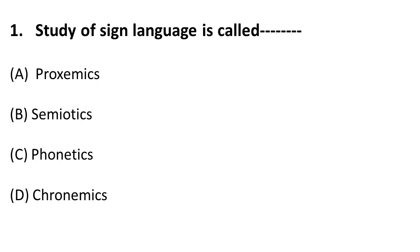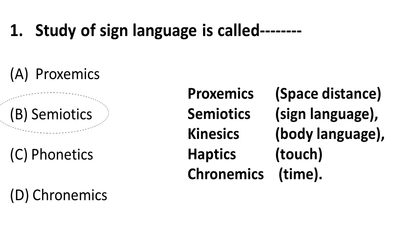The first question is: the study of sign language is called what? This question is related to communication. The study of sign language in a communication system is called semiotics. There are five theories for studying nonverbal communication: when it is about space or distance, it is proxemics; sign languages, it is semiotics; body language, it is kinesics; touch, it is haptics; and time, it is called chronemics.